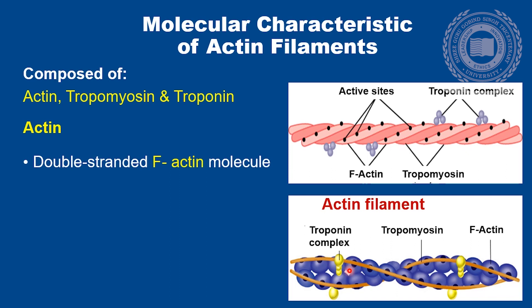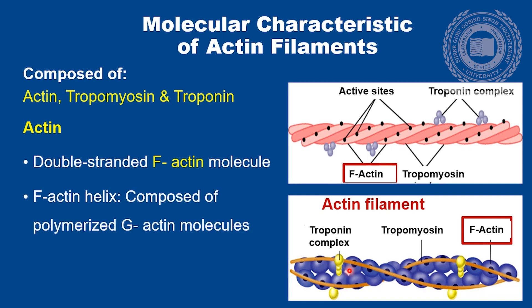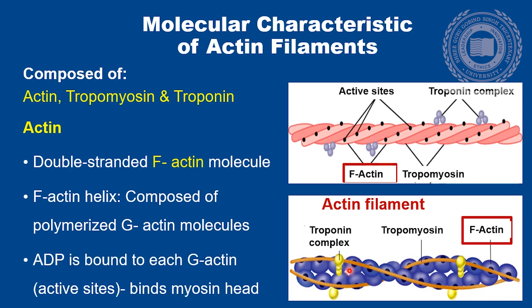The backbone of actin filament is F-actin, which is a double-stranded protein molecule. The two strands are wound in a double helix. Each strand of F-actin helix is composed of polymerized G-actin molecules. Attached to each G-actin molecule is one molecule of ADP, which are the active sites with which the myosin head binds.